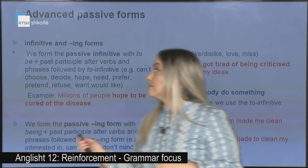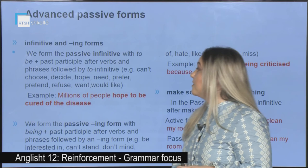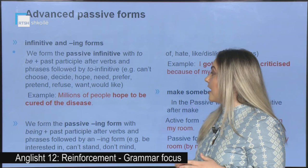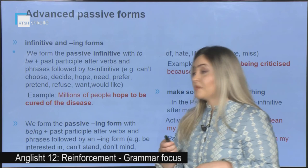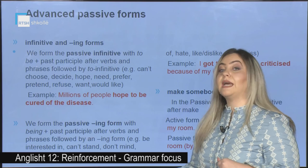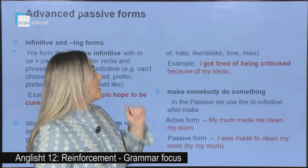Infinitive and ING forms in the passive. We form the passive infinitive with 'to be' plus past participle after verbs and phrases followed by the to-infinitive: choose, decide, hope, need, prefer, pretend, refuse, want, would like. We form the passive ING form with 'being' plus past participle after verbs and phrases followed by an ING form, such as: be interested in, can't stand, don't mind, enjoy, get tired of, hate, like, dislike, love, or miss.